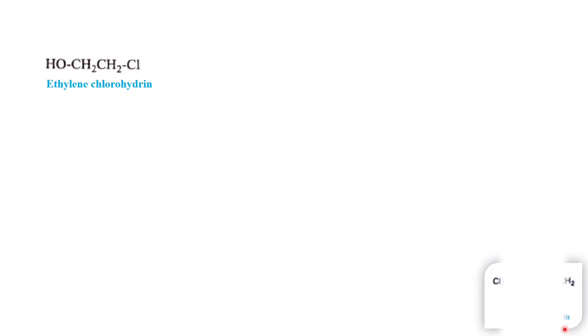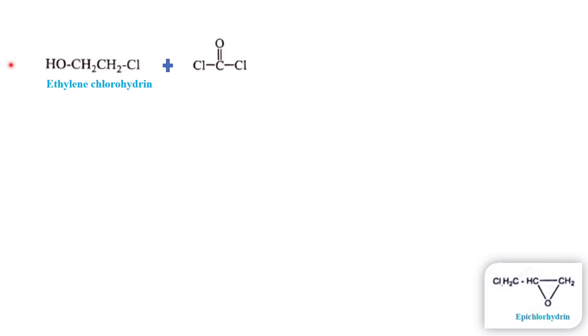Now we will see the synthesis of carbachol chloride. The starting material is ethylene chlorohydrin. We have already come across epichlorohydrin in the synthesis of propranolol; here we take ethylene chlorohydrin instead. Ethylene chlorohydrin is treated with phosgene, which is Cl-CO-Cl. The hydrogen on ethylene chlorohydrin combines with the Cl of phosgene and is removed as HCl, so the CO-Cl group is added to the oxygen, giving an intermediate.